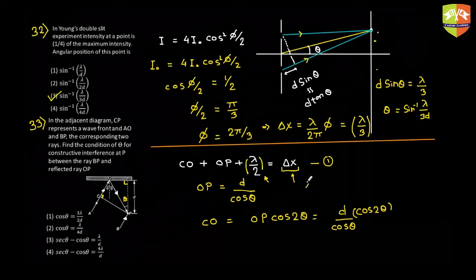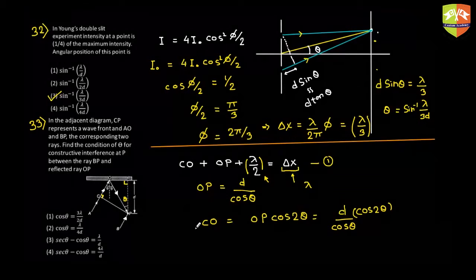And you need to have a consecutive difference over here, right? So for consecutive difference, delta x should be at least equal to lambda. So you can just put the value over here as lambda and then just simplify it and you will get the answer. The correct answer is the 33rd. That's it for today from my side.